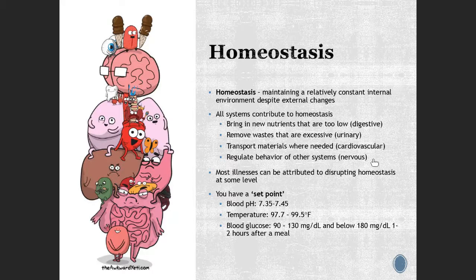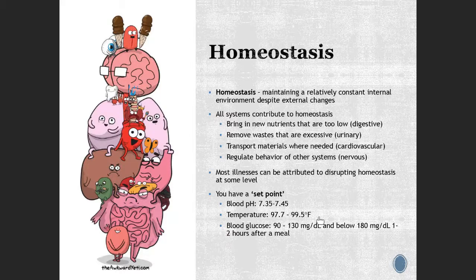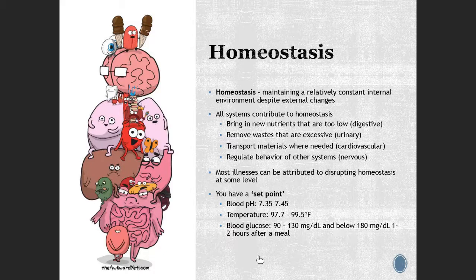Most illnesses occur when we disrupt homeostasis at some level — when things get out of whack, that's when we start to see problems. Blood has a certain pH range it likes to stay at and the body monitors that. Human body temperature — you've probably heard about 98.6°F, though research suggests it's actually a wider range; some people run hot, some run cold. Blood glucose levels also have to be maintained: if they get too low, your body will recognize that and go to its reserves to release stored glucose.